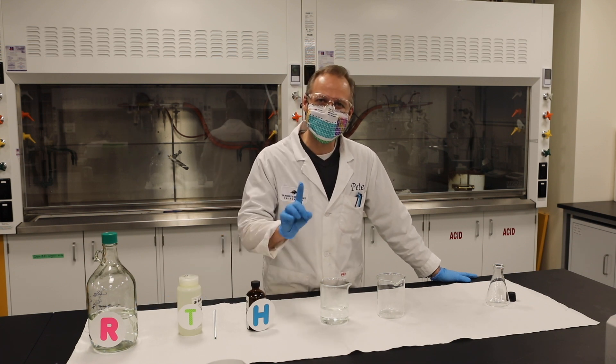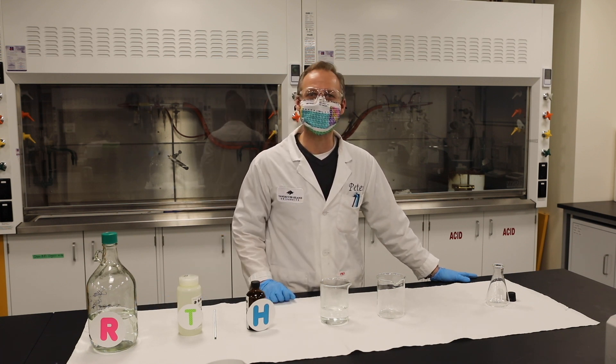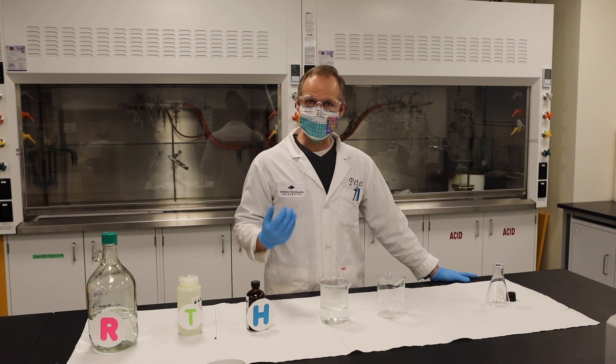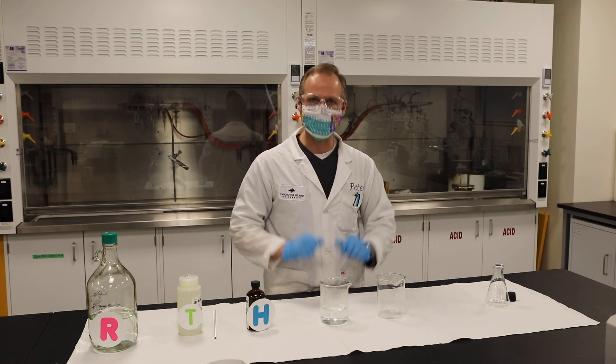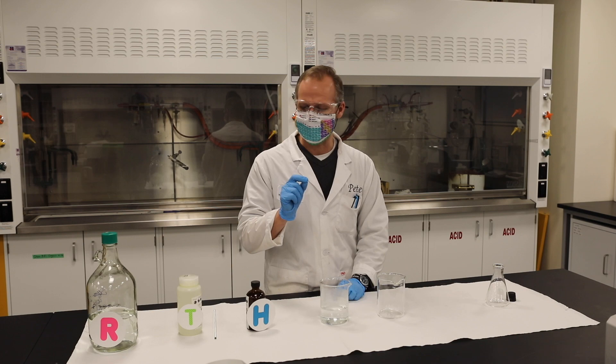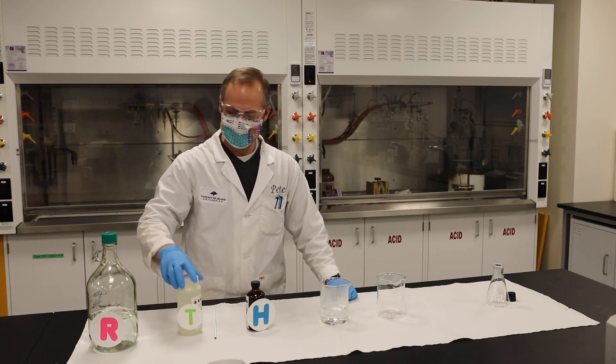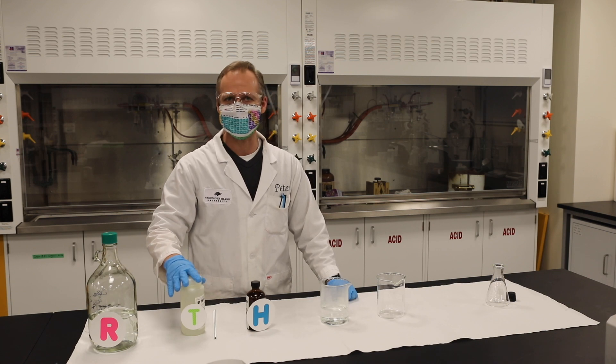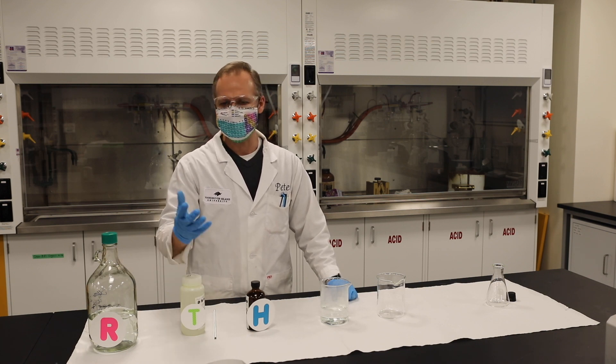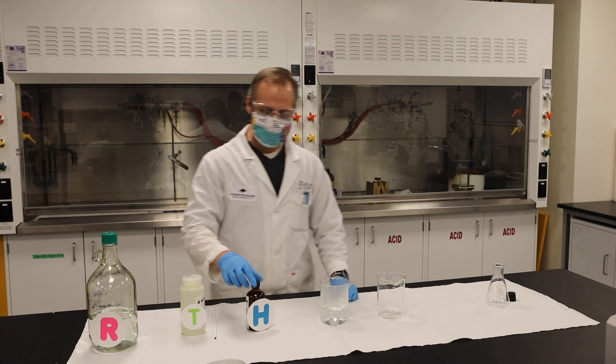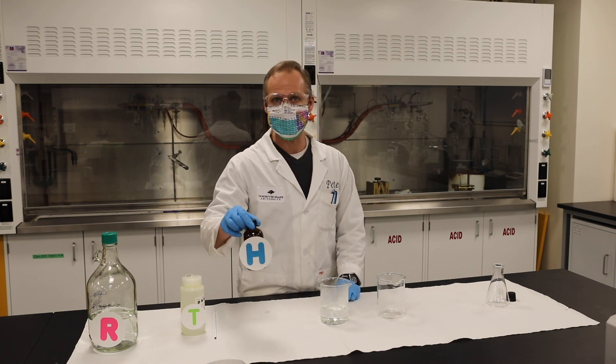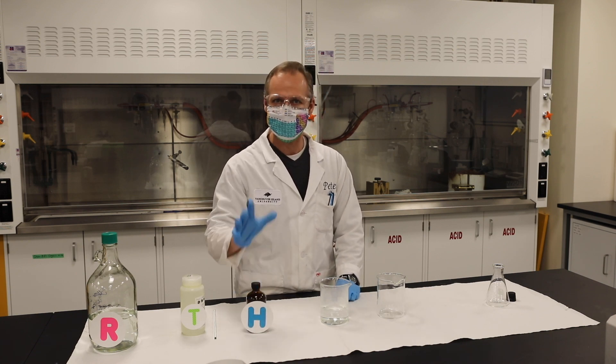Alright, welcome back. So for the final demo, what we're going to do is something called the traffic light reaction. It's a color reaction. All it is is just liquids mixing back and forth, but there's something special about them. I got sugar water over here. So water and sugar, nothing exciting, and I've got base, sodium hydroxide, a little bit like drain cleaner or something. And then in here I've got a dye, indigo carmine. It's a blue dye, same color as your jeans.